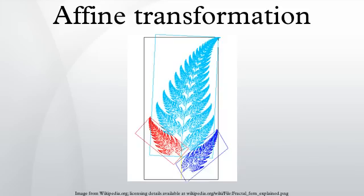Ordinary matrix-vector multiplication always maps the origin to the origin, and could therefore never represent a translation, in which the origin must necessarily be mapped to some other point. By appending the additional coordinate 1 to every vector, one essentially considers the space to be mapped as a subset of a space with an additional dimension. In that space, the original space occupies the subset in which the additional coordinate is 1. A translation within the original space by means of a linear transformation of the higher-dimensional space is then possible. The coordinates in the higher-dimensional space are an example of homogeneous coordinates.